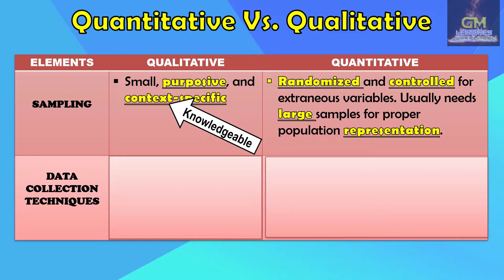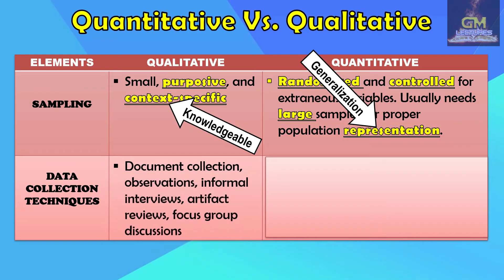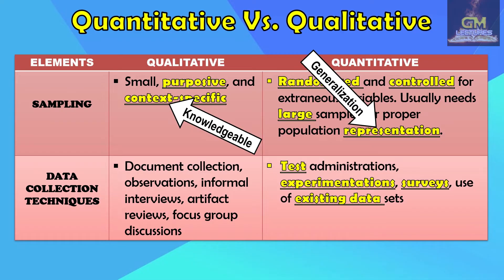The purpose of large samples in quantitative research is generalization — whatever is true for the sample population may be considered true for the general population it represents. In terms of data collection techniques, qualitative research involves document collection, observations, informal interviews, artifact reviews, and focus group discussions, while quantitative research involves test administrations, experimentations, surveys, and the use of existing datasets.